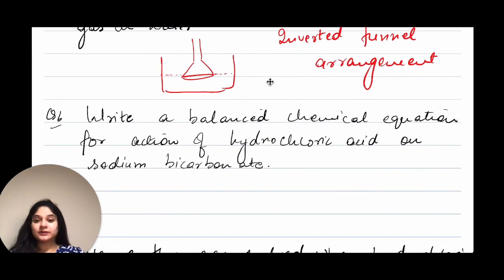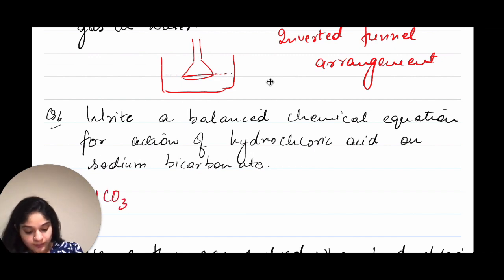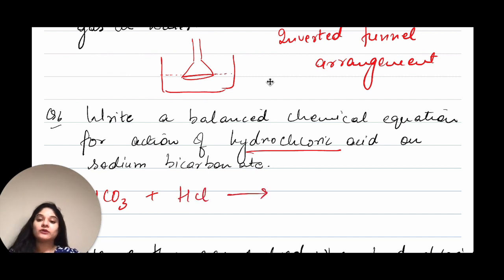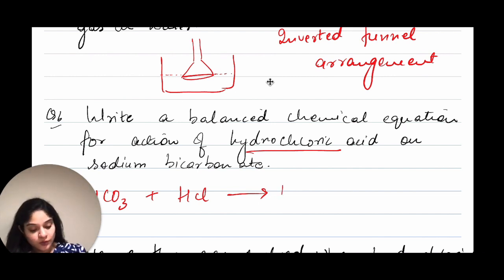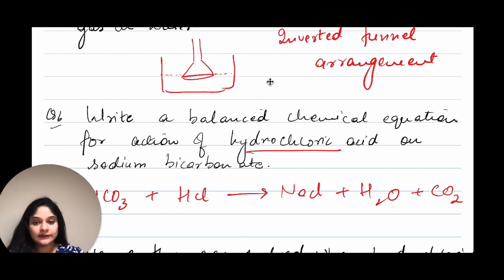Question number six: write a balanced chemical equation for the action of hydrochloric acid on sodium bicarbonate. Sodium bicarbonate is NaHCO₃. NaHCO₃ plus HCl gives us NaCl plus water plus carbon dioxide gas. If you face any problems with the balancing, mention it in the comments section below.